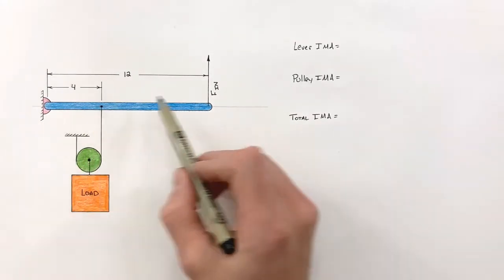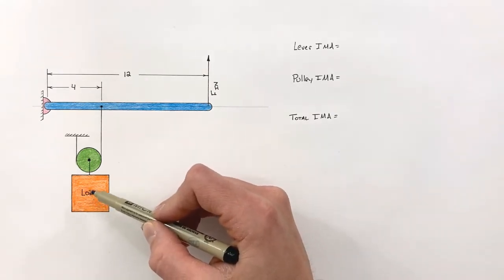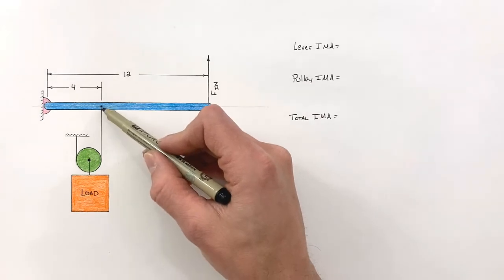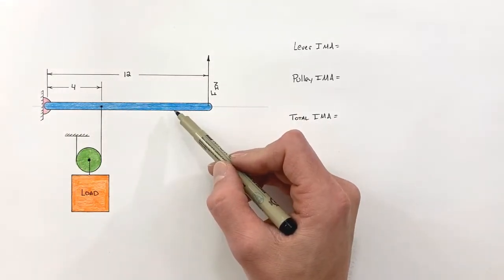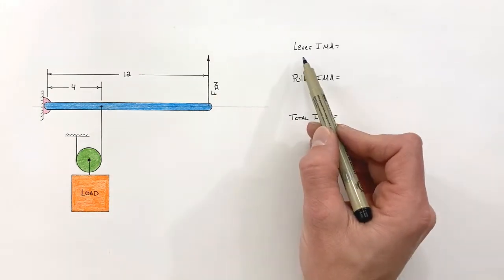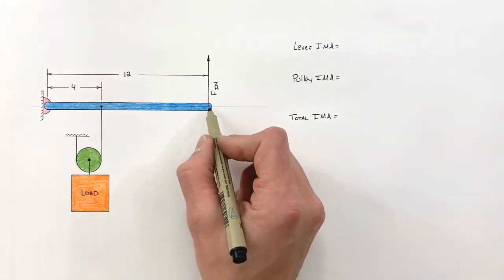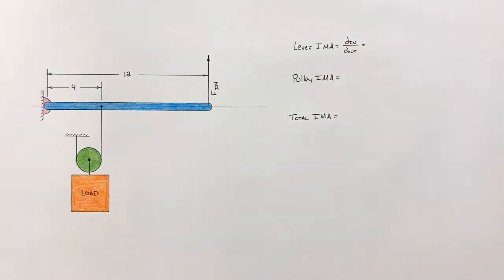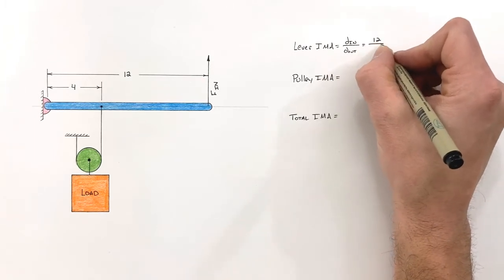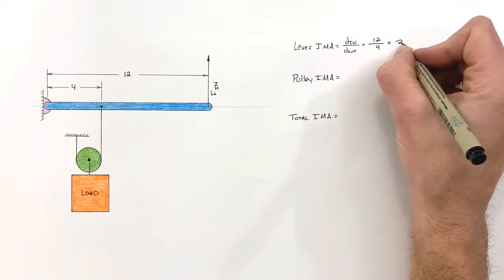First let's look at the lever. We have a lever with an input force over here, and while the load is not directly attached to the lever, the string attached to the lever is effectively the output for our lever as it relates to the compound machine. The IMA for a lever is given by the input length divided by the output length — in this case, that's 12 over 4, so the ideal mechanical advantage of the lever is 3.